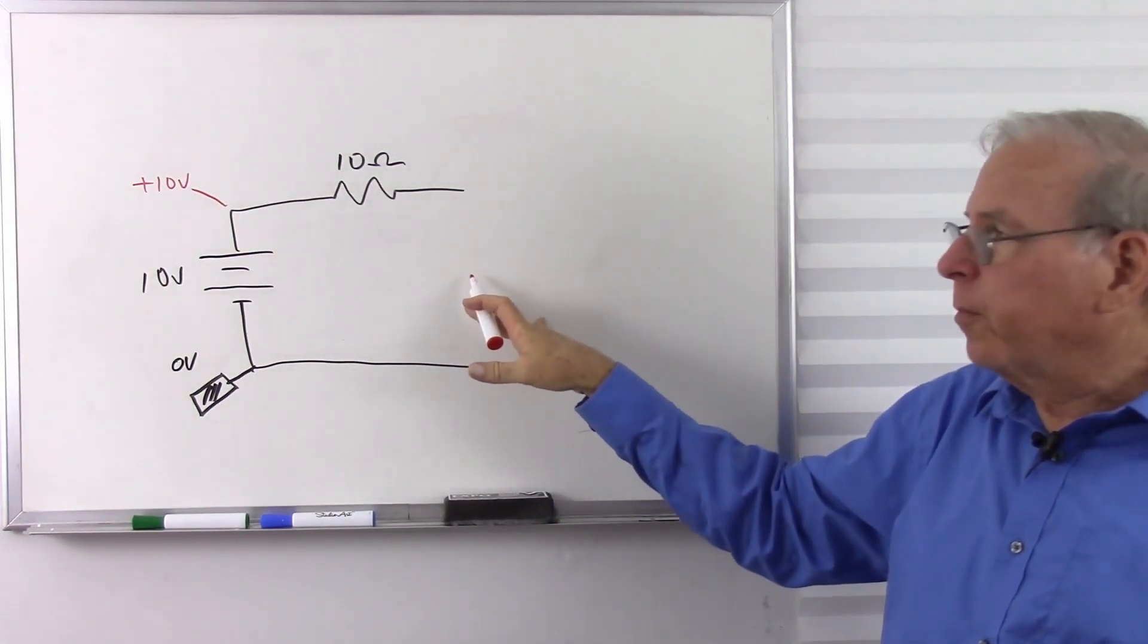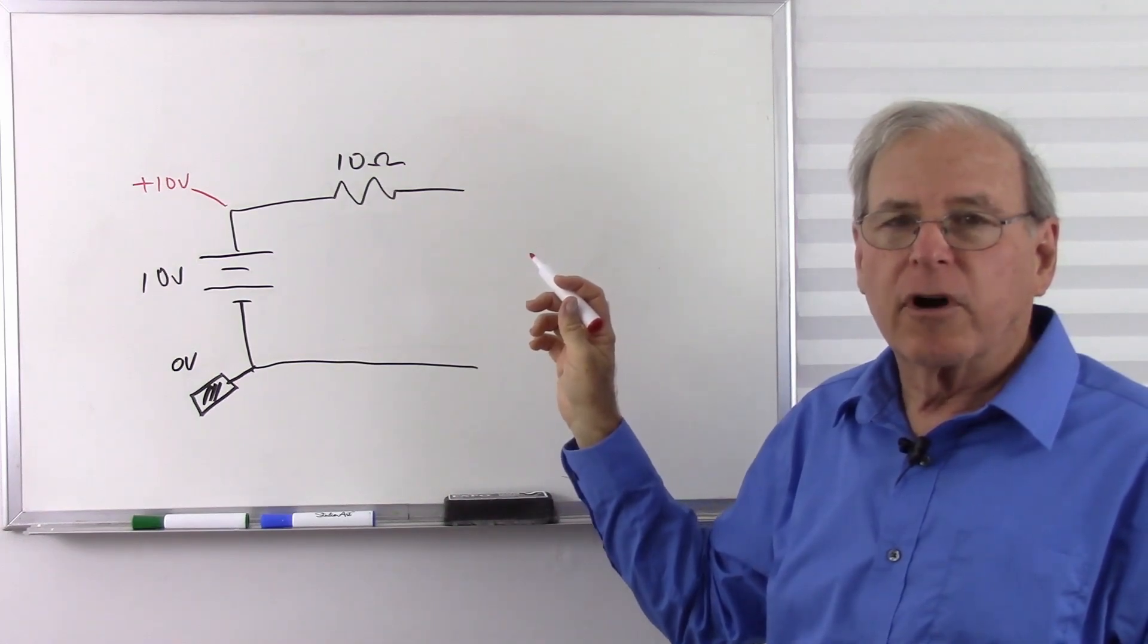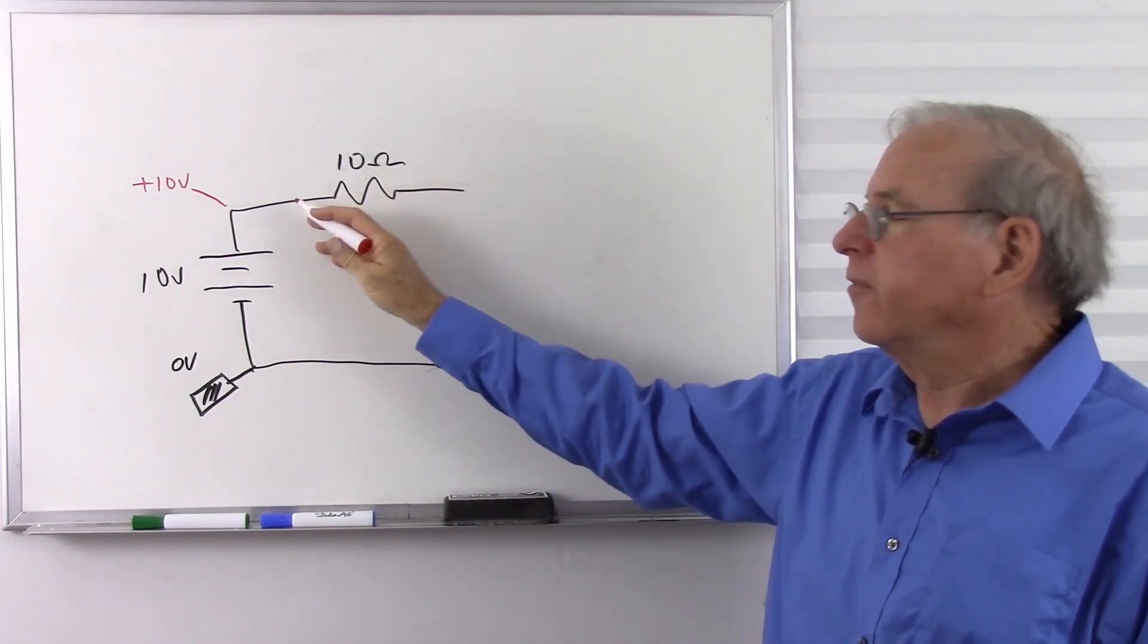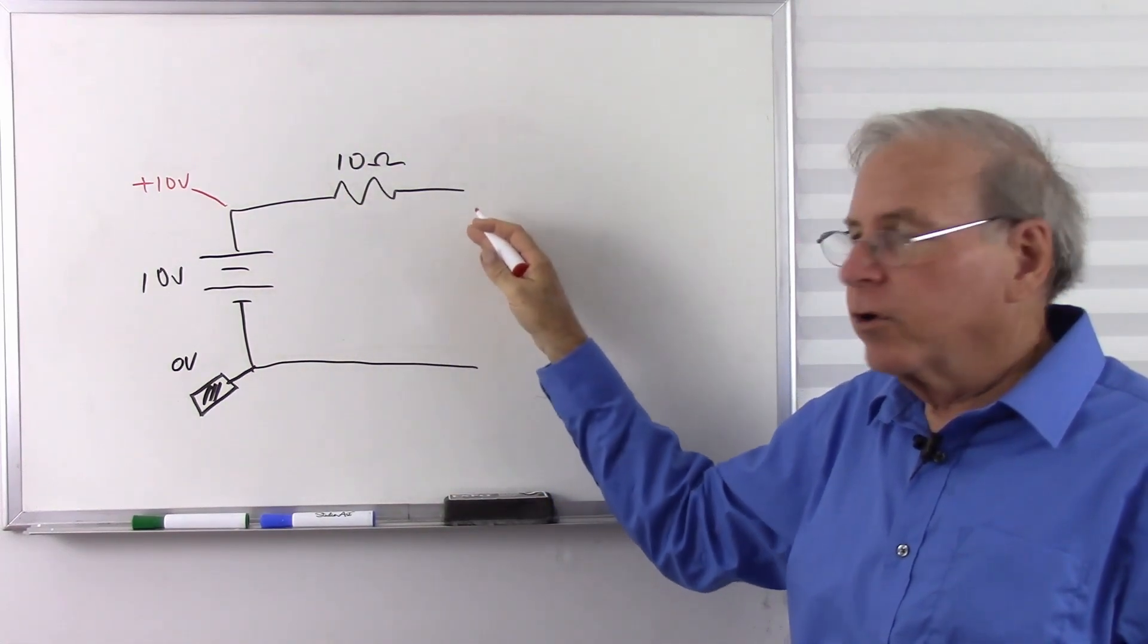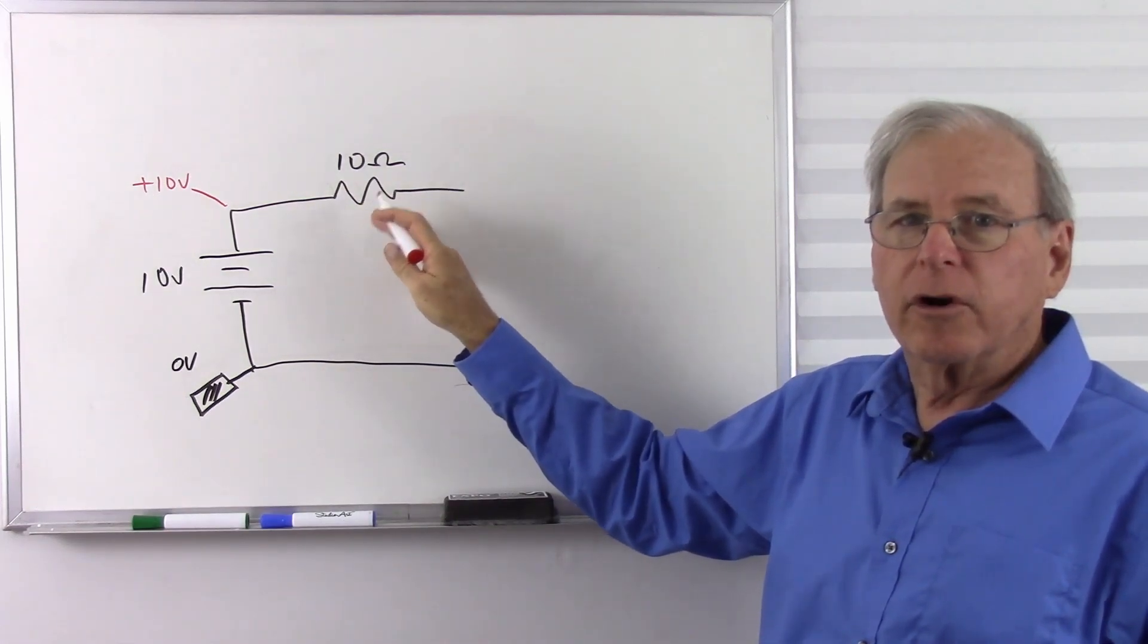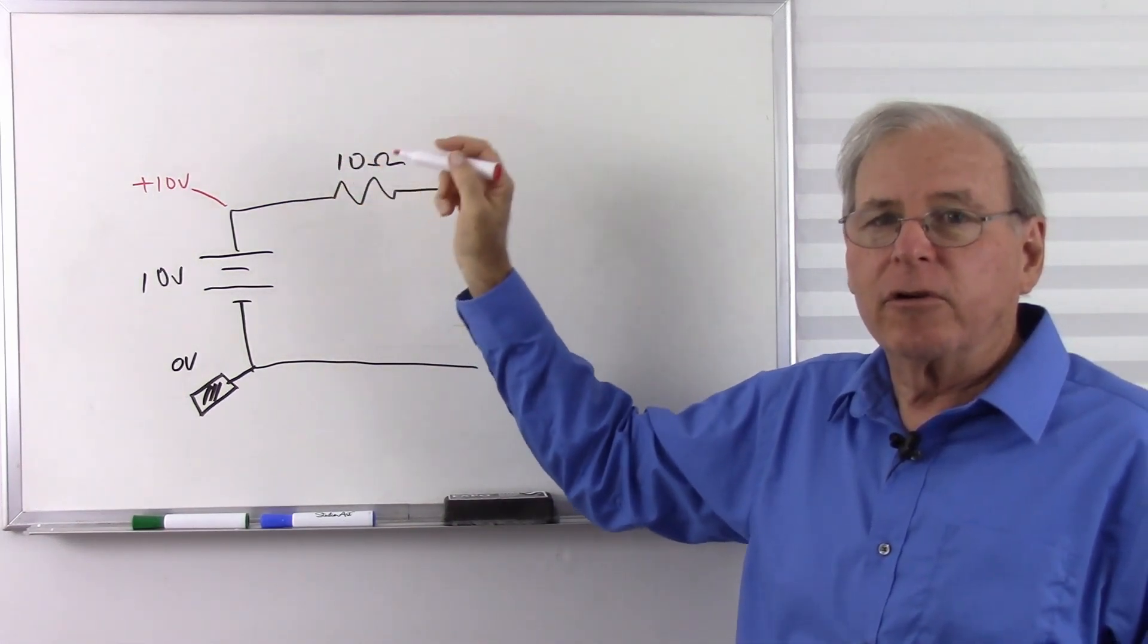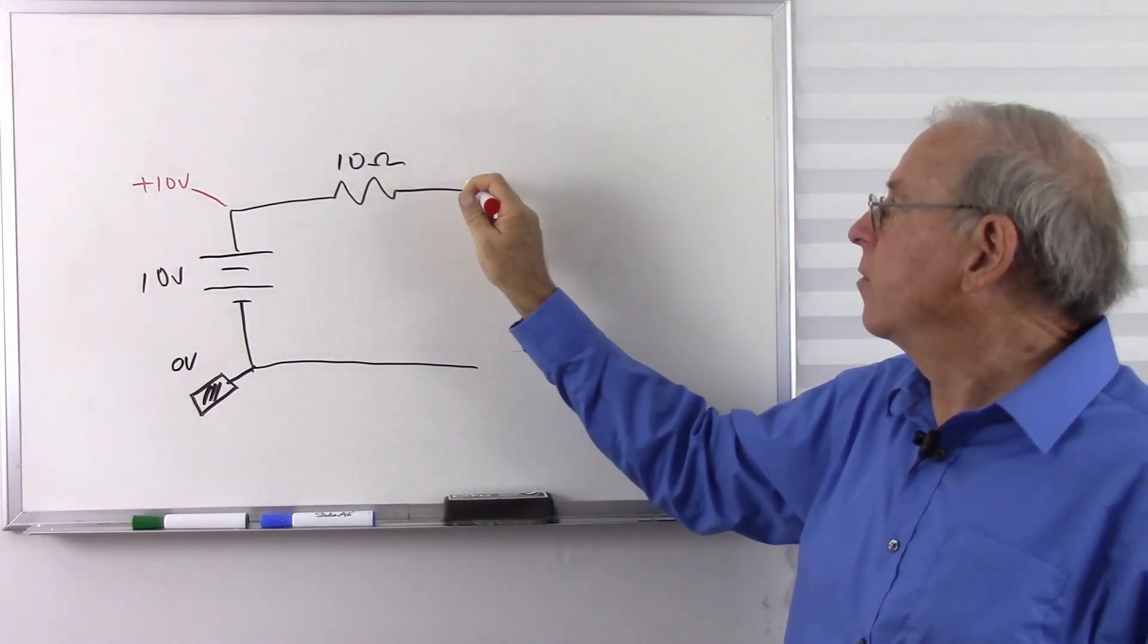Now, the circuit is open, so there's no current flowing through it. How much voltage do I lose across this resistor? What's the voltage difference between here and here? There is none, because I have a resistance, but I have no current because the circuit is broken. So, resistance, no current. Voltage difference is zero, no difference. So I start with 10 volts. I still have 10 volts.